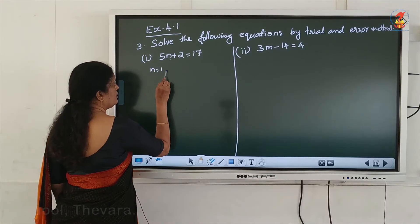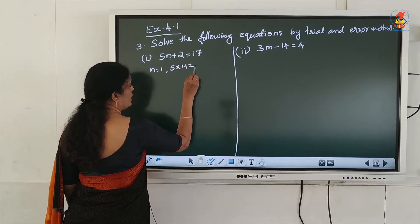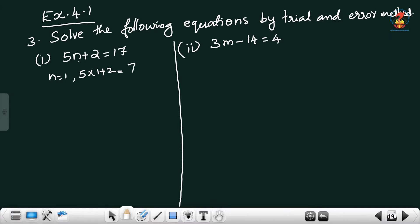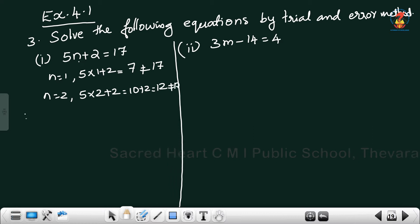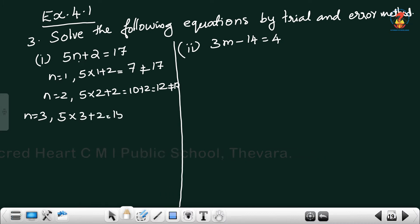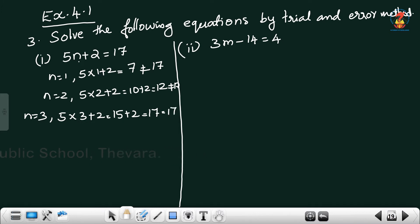For n = 1: 5×1 + 2 = 7, not equal to 17. For n = 2: 5×2 + 2 = 12, not equal to 17. For n = 3: 5×3 + 2 = 15 + 2 = 17, which equals the RHS of 17. Therefore, n = 3 is the solution.